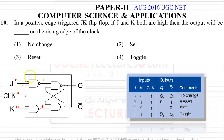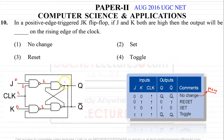This state — when J equals 0 and K equals 0 — is called the memory state, because the output is retained or restored in this case.